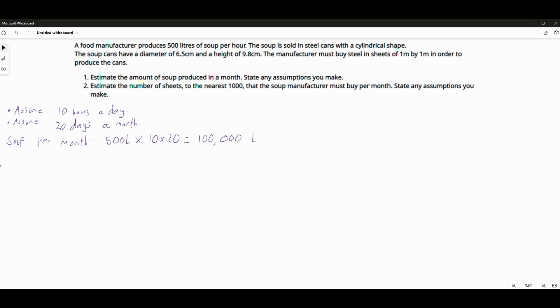Part two. We need to estimate the number of sheets required to produce how many cans, you know, to produce all the cans that we need. We can't do that until we know how many cans of soup we're actually going to produce. So how many cans of soup do we need? Well, enough to hold 100,000 litres worth of soup.